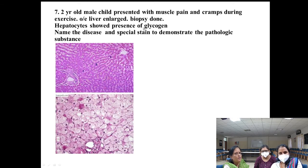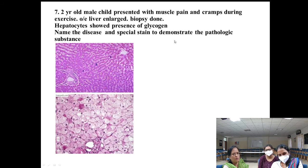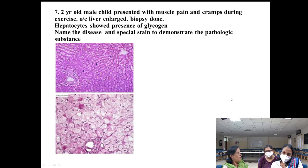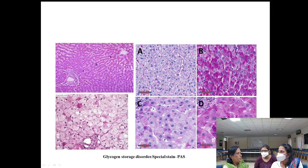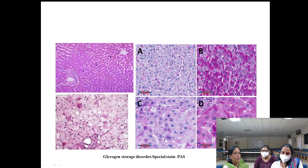The liver was described as 'sweet' due to glycogen accumulation. Students knew the diagnosis — glycogen storage disease — and some even named the Periodic Acid Schiff (PAS) stain. The extra pictures showed liver stained with PAS, demonstrating PAS-positive magenta-colored substance clearly in hepatocytes.